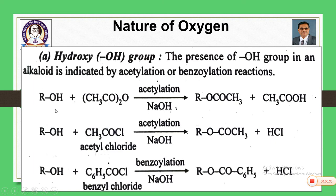If oxygen is present in the form of a hydroxy group, then the presence of a hydroxy group in an alkaloid is indicated by acetylation or benzoylation reaction. If you have an alcoholic group, it can be acetylated to the corresponding acetyl derivative using acetic anhydride. The alcoholic OH on acetylation gives the corresponding acetyl derivative, and the byproduct is acetic acid. The same reaction can be carried out using acetyl chloride (CH₃COCl) — we get the acetyl derivative; the difference is only in the byproduct: acetic anhydride gives acetic acid, acetyl chloride gives HCl.